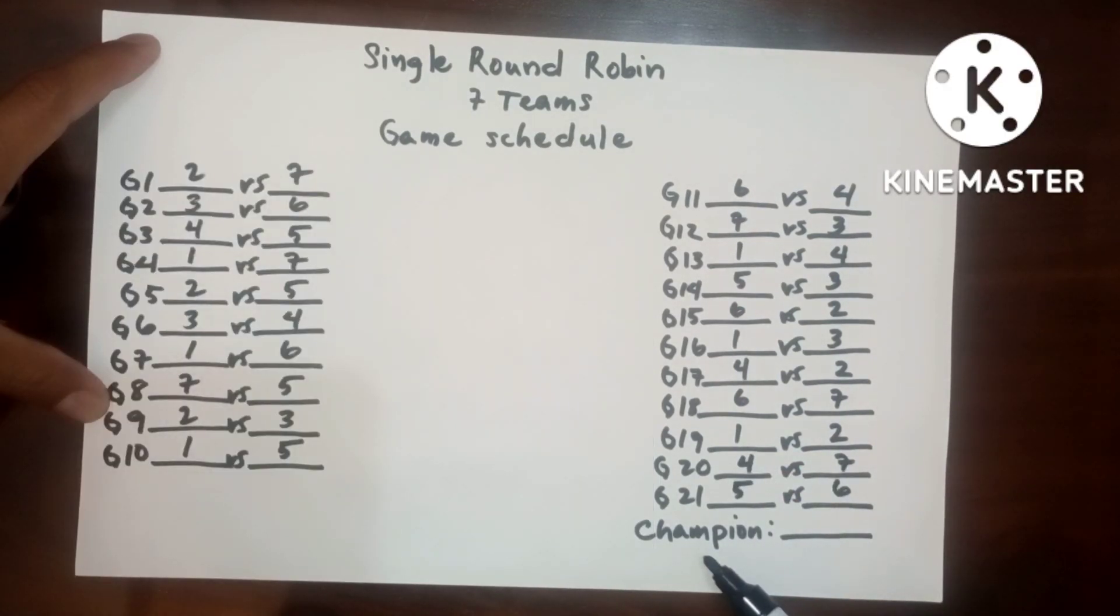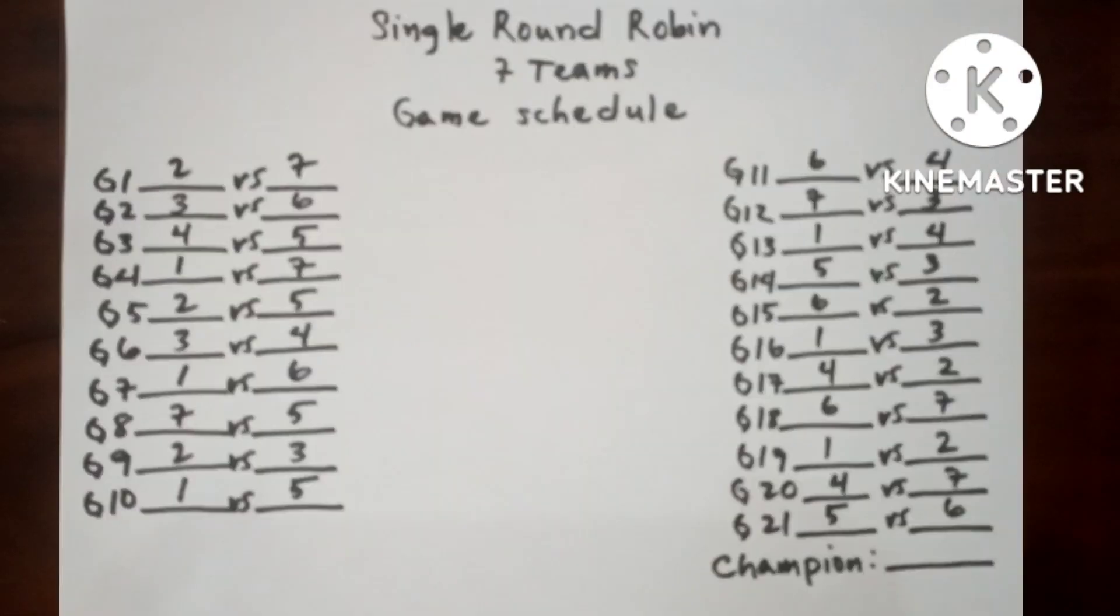And the champion must be placed here. This is the pairing and game schedule for seven teams or seven number of entries.